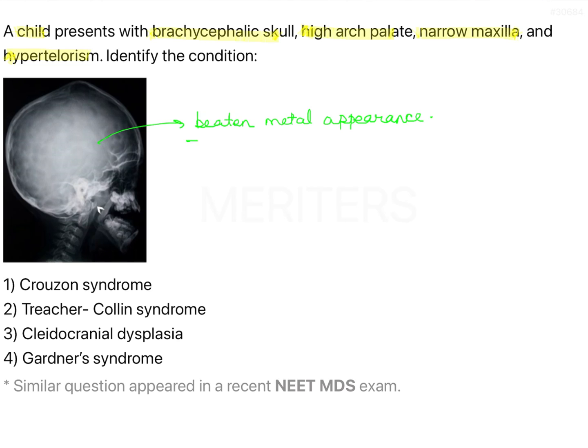Now, what are these features specific of? The options here are Crouzon syndrome, Treacher Collins syndrome, cleidocranial dysplasia, and Gardner syndrome.